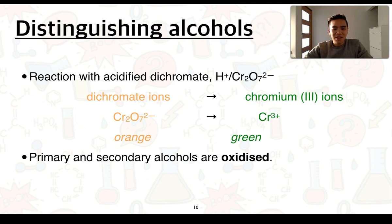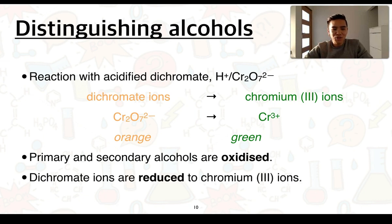We know that primary and secondary alcohols are the only alcohols which can be oxidized by acidified dichromate. In turn we say that dichromate ions end up becoming reduced to chromium three ions. From this we can look at how we can balance this redox half equation.